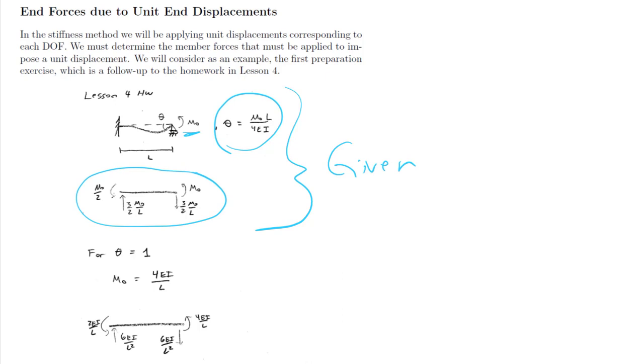Now the key here is that we want to get the information not for a value of theta equal M0L over 4EI, but for a unit value of theta. So plug theta is equal to 1 here. It gives us that value for the moment. And given that we have M0 here, plug that into this information, and we get this free body diagram.